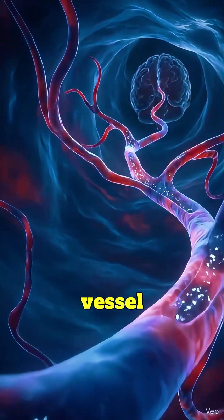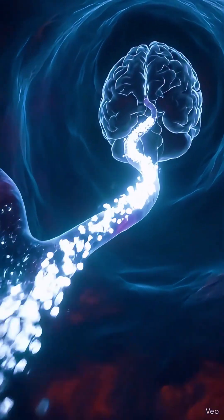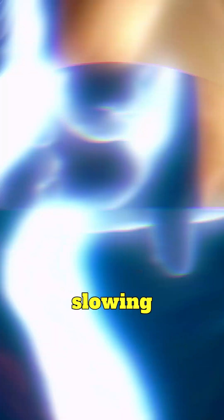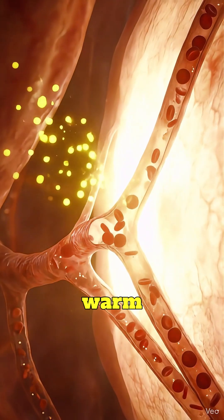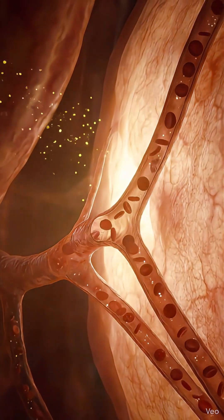The particles pause at a branching vessel, then move decisively down the pathway leading to the target organ. Slowing their pace, the particles sense the warm glow ahead, signaling they are close to the target organ.